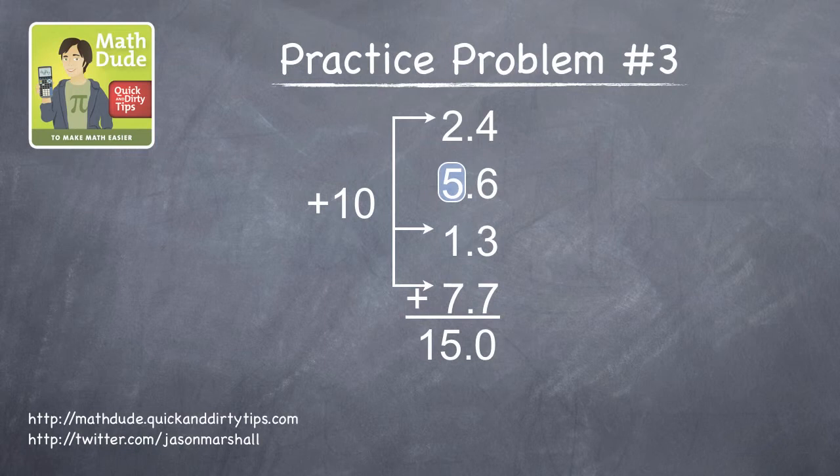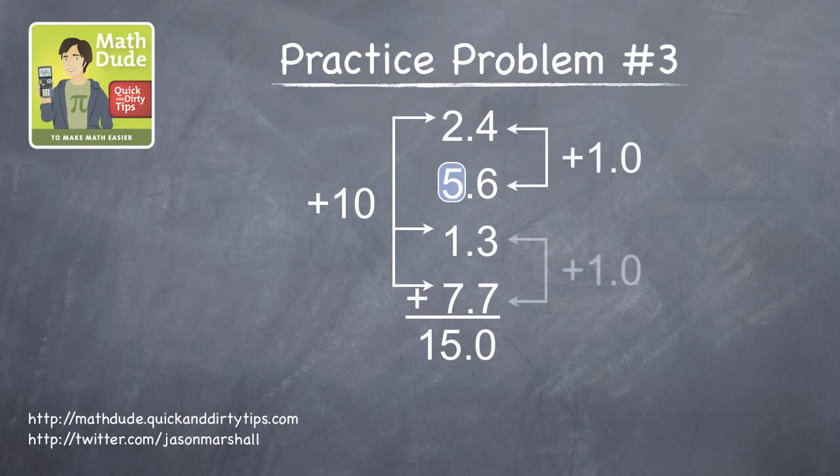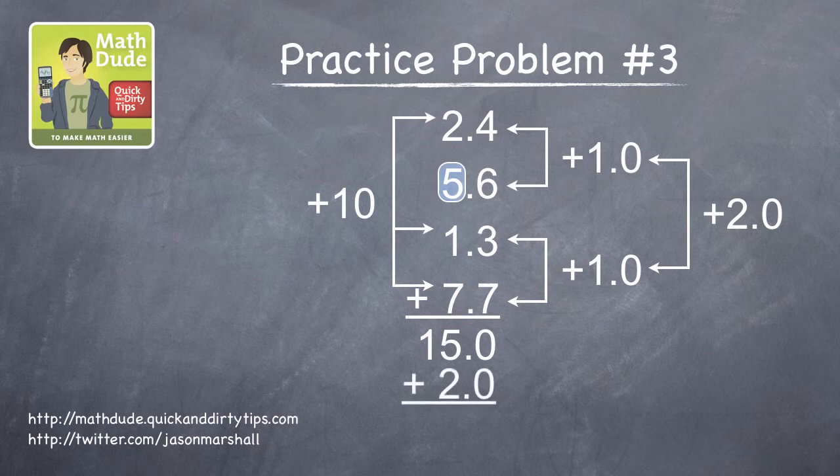Now, let's move to the tenths column and find pairs that add to ten. There are two of them, which give a combined total of 2.0. When we add this to 15.0, we get the final answer, 17.0.